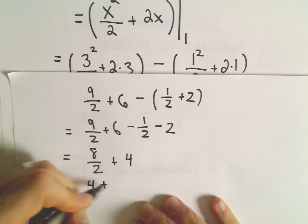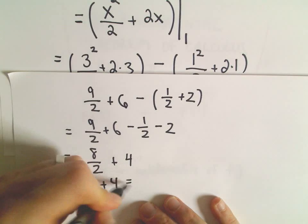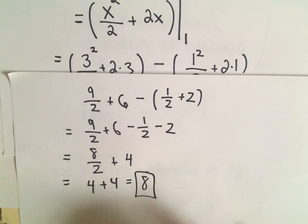Well, 8 over 2 is just 4. So we have 4 plus 4, we get the value positive 8.